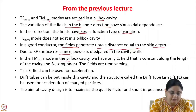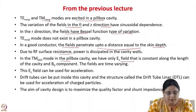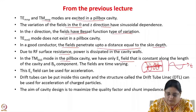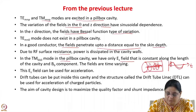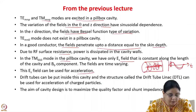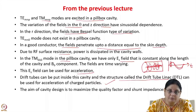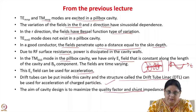In the TM010 mode in the pillbox cavity, we have only the Ez field that is constant along the length of the cavity. We have the Ez field along the z direction and the B-theta field, and these fields vary with time. This Ez field, since it has a time variation, can be used for acceleration. Drift tubes can be put inside this cavity — if you make a long pillbox cavity, you can put drift tubes inside and the resulting structure is known as the drift tube linac or DTL, which can be used for acceleration of charged particles. We also studied various figures of merit of the cavity like the quality factor and shunt impedance. The aim of the cavity design is to maximize the quality factor and shunt impedance.